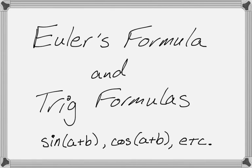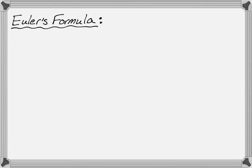In this video we are going to use Euler's formula to arrive at some trig formulas. Specifically we're going to end up with the sine of a plus b and the cosine of a plus b. Once you have those you can use other things to get all the other formulas that you might need.